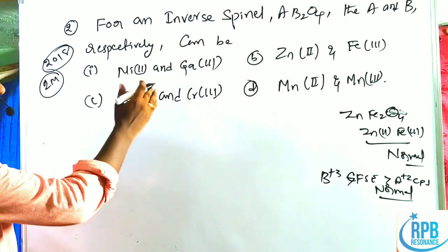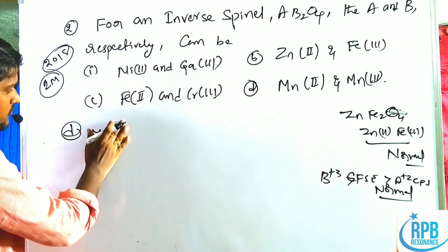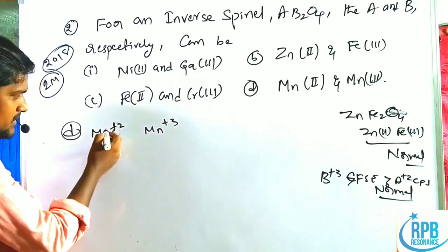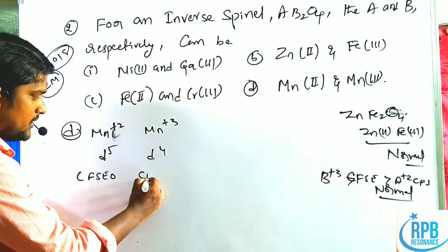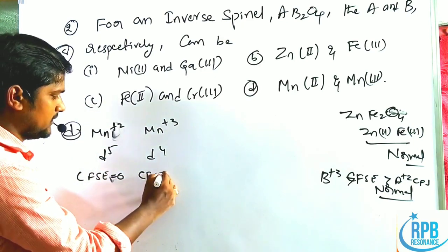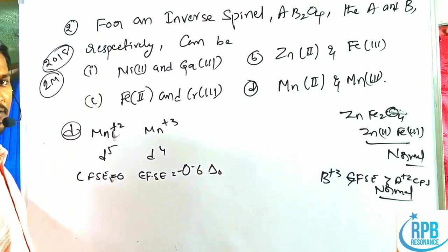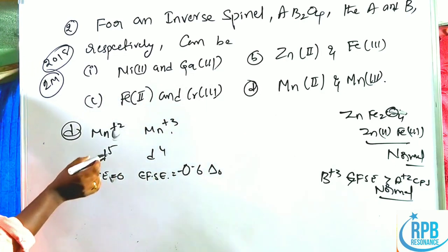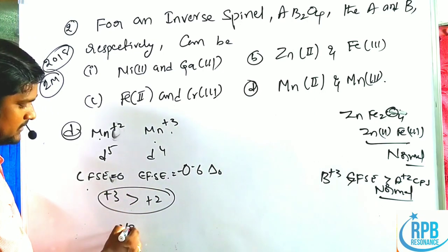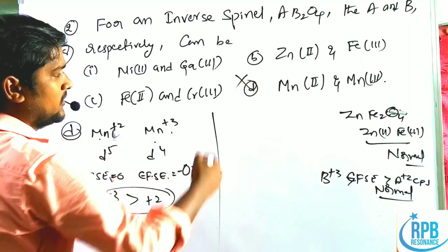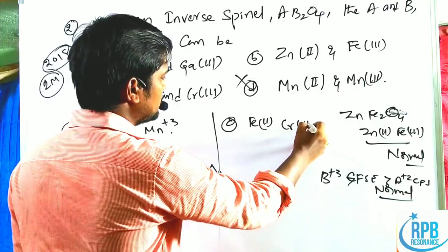Let us go with option D: Mn²⁺ and Mn³⁺. Mn²⁺ has d⁵ configuration (CFSE = 0); Mn³⁺ has d⁴ configuration (CFSE = 0.6 ΔO). Since the B³⁺ CFSE (0.6 ΔO) is greater than A²⁺ CFSE (0), this is a normal spinel — not our answer.